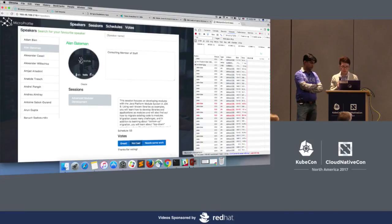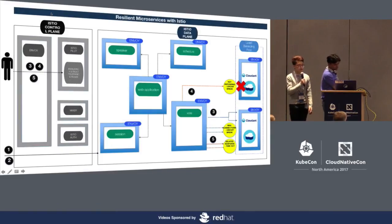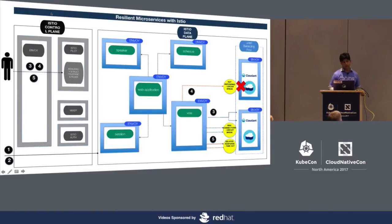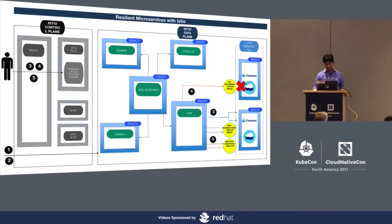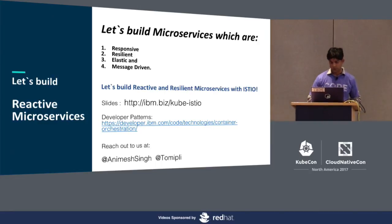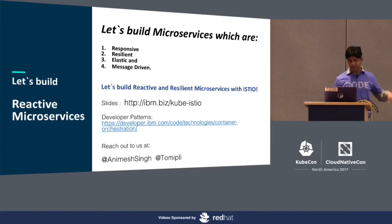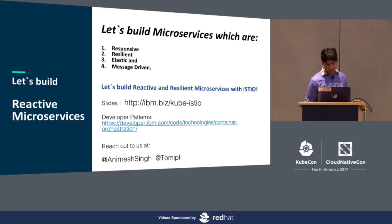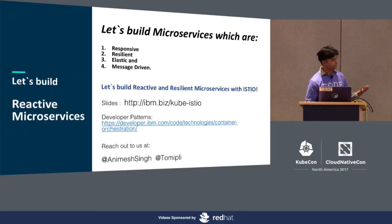Thanks Tommy. What was just shown is that using a simple Istio policy rule, you can eject a service which is not performing out of the load balancing pool and all of a sudden all your errors are gone. A lot of these are mentioned in the GitHub repository. If you want to try it out, our developer patterns around Istio and microservices are at that link, and the slides are at this link. Let's build reactive microservices — microservices which are responsive, resilient, elastic, and message driven. Thanks again.